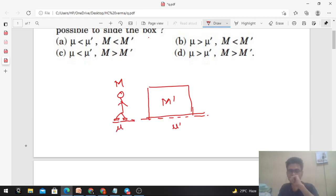Right. So what is the condition that the block does not slide? If the man applies a horizontal force F on the block, the same equal and opposite force will be applied by the box on the man, so it will be F back.